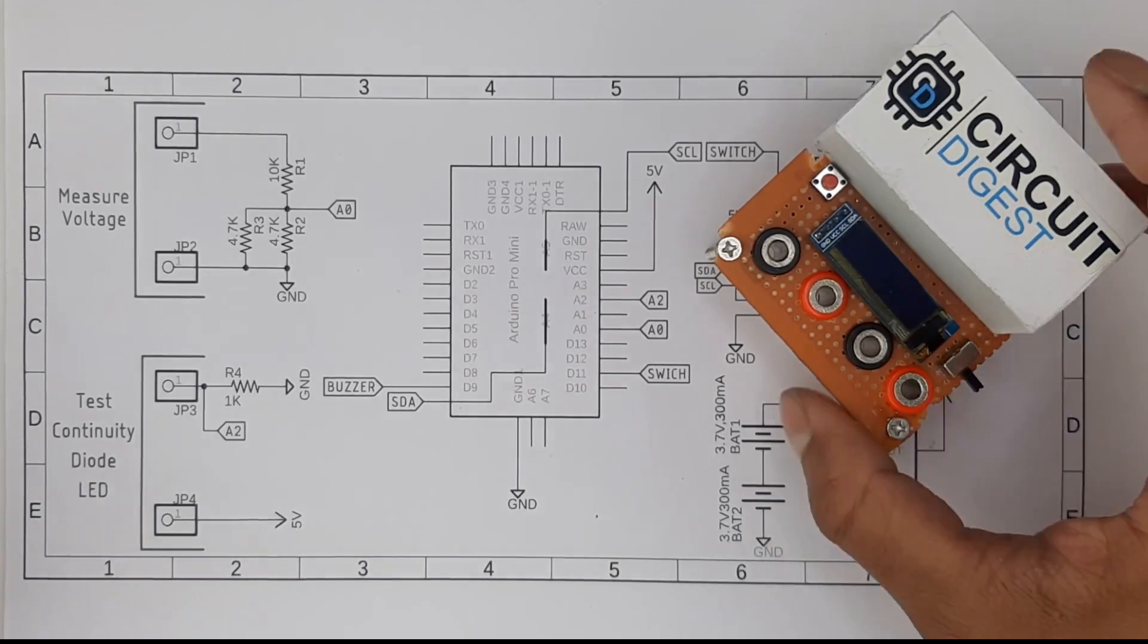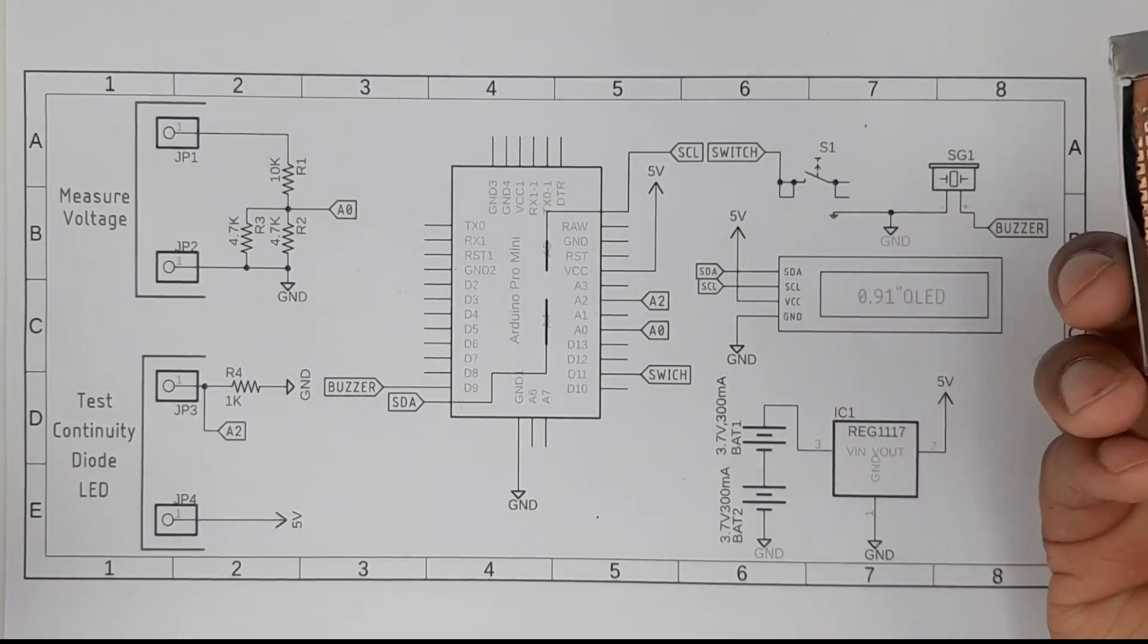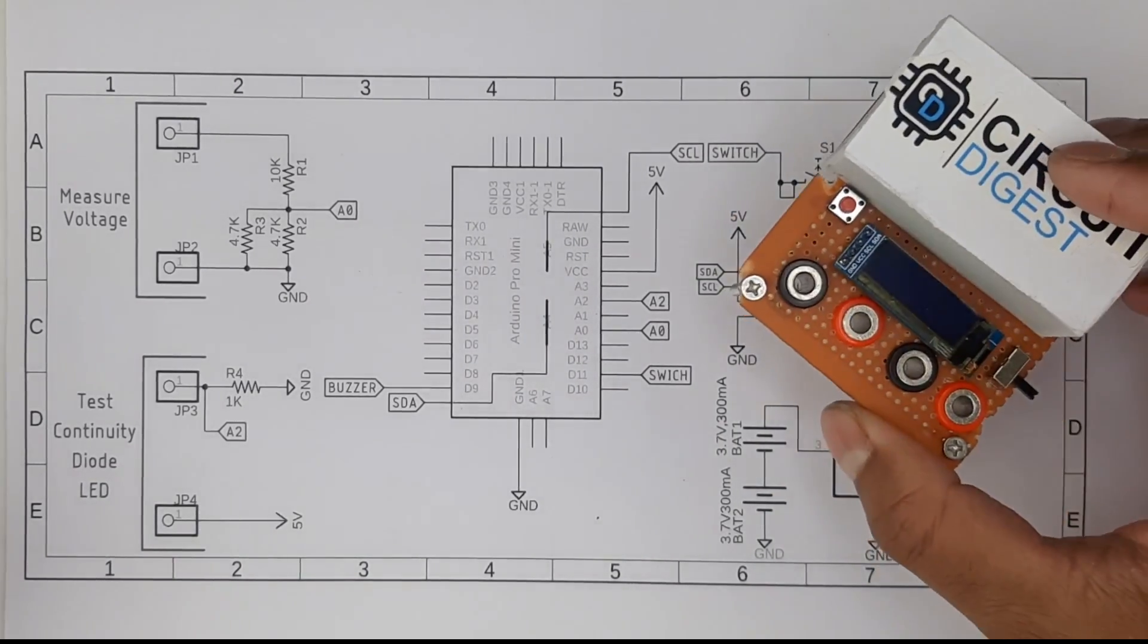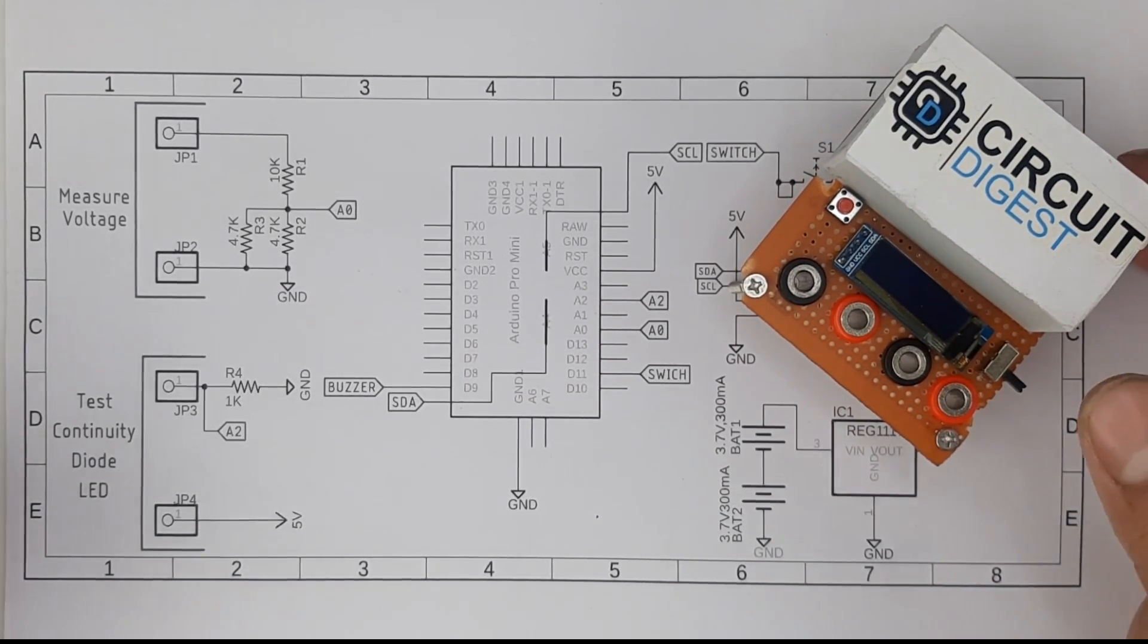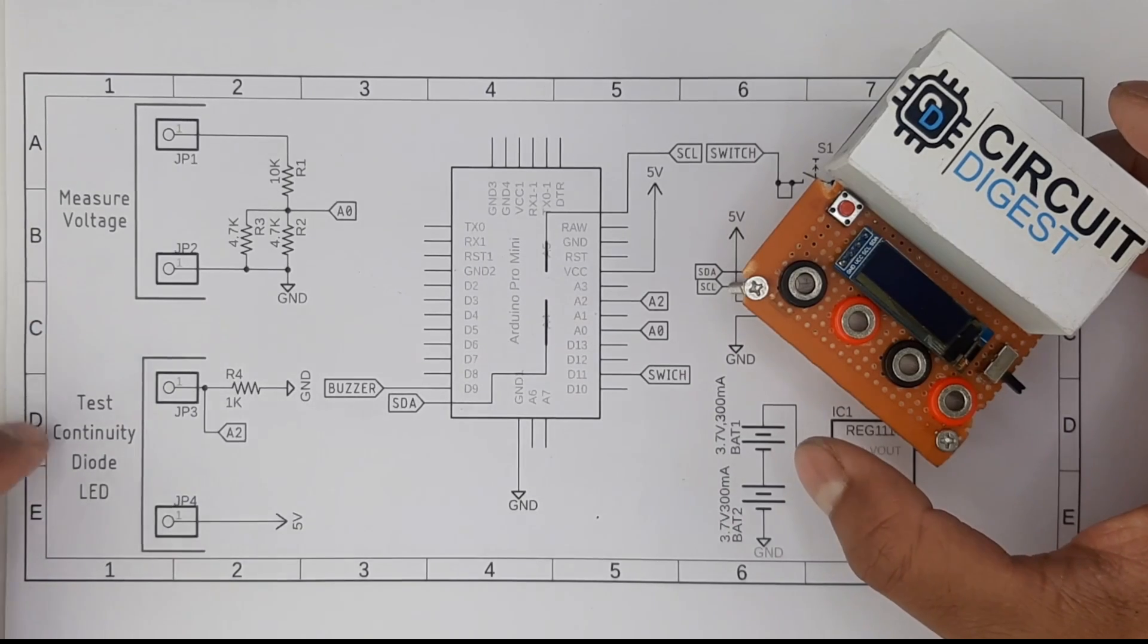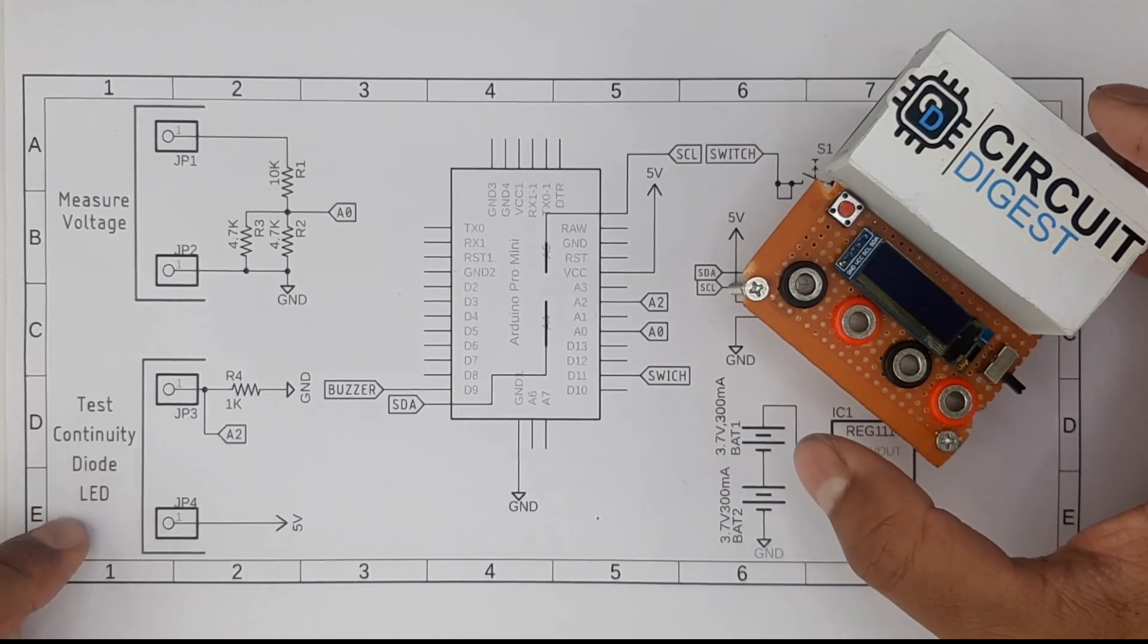This is not a fully functional multimeter but can do basic stuff like measuring voltage, continuity test, diode test, and it can also tell the forward voltage drop of an LED.